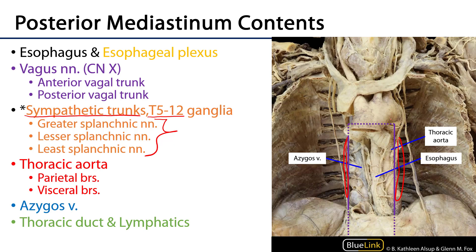Also within this space will be a large part of the thoracic portion of the descending aorta, which we can see here, along with various branches coming from it — both parietal branches serving the walls of the thorax and diaphragm, as well as visceral branches serving the bronchi, pericardium, mediastinal lymphatics, esophagus, and so on. Also within the space will be the azygous vein, which is the main conduit for its tributaries draining the walls of the thorax. Moving through this space as well will be the thoracic duct and various lymphatics.